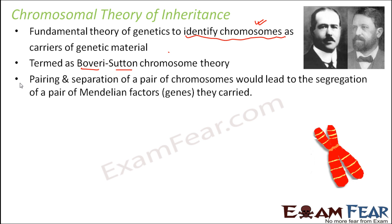With this theory, it was observed that whatever laws Mendel had given were also correct. Mendel said that the factors or alleles segregate for gamete formation. Here also it was seen that chromosomes separate out to form gametes and again pair up for recombination. So pairing and segregation was part of chromosomes as well. Since chromosomes contain genes, the way chromosomes behave also influences the way genes will behave.